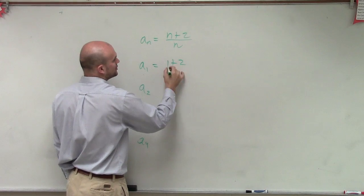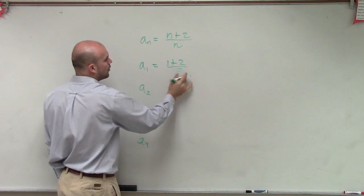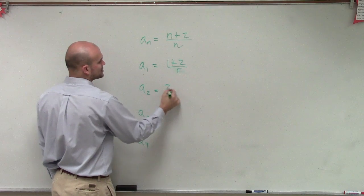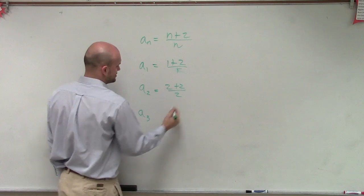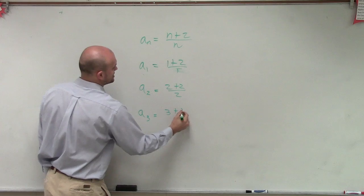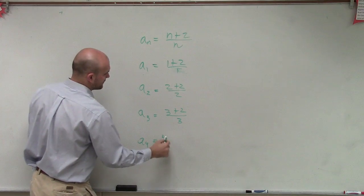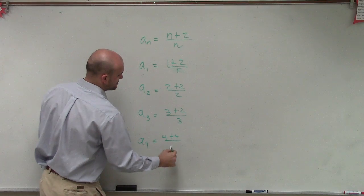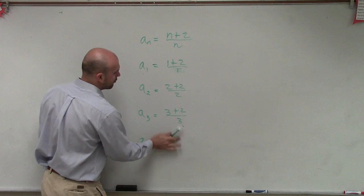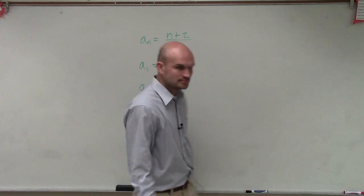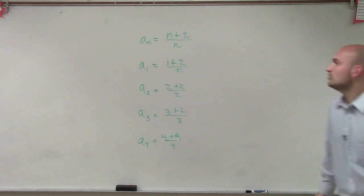So it'd be 1 plus 2 divided by 1. For 2, it's 2 plus 2 divided by 2. For 3, 3 plus 2 divided by 3. And then we have 4 plus 2 divided by 4. Does that kind of make sense? Pretty basic.